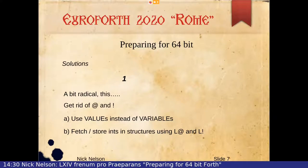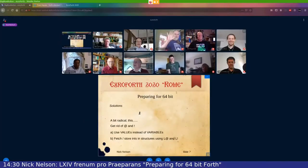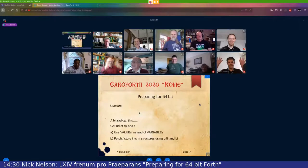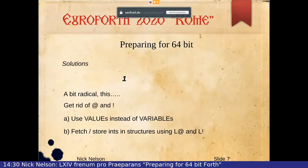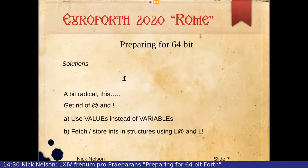So what were our proposed solutions? One proposed solution is to get rid of fetch and store. Ever since we started using values a few years ago, I've really loved values instead of variables. Using values gets rid of fetch, and store is replaced by a pointer construct. Having got rid of all the variables in our actual application, we were left with a much smaller number of fetches and stores, which made it much easier to convert all those to have an explicit size.